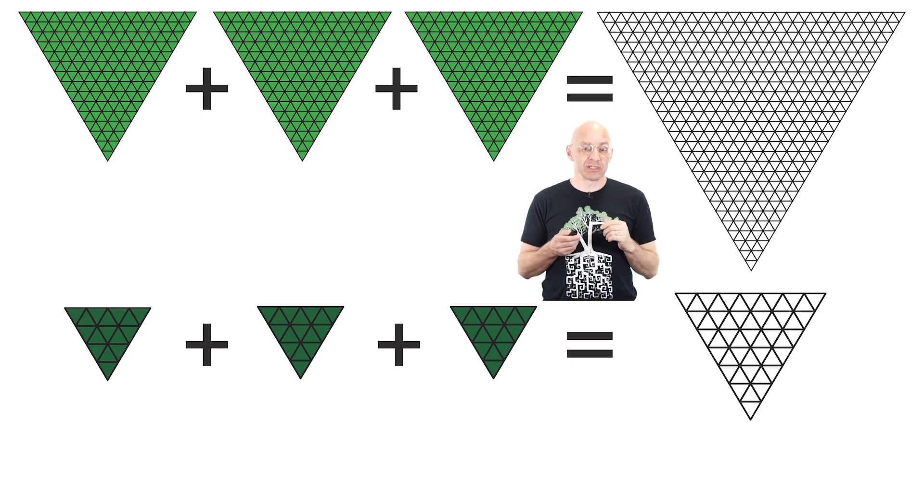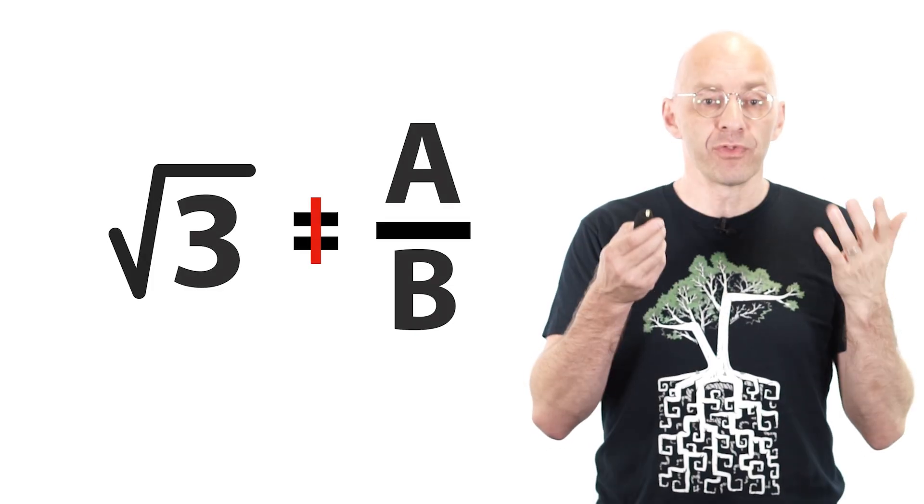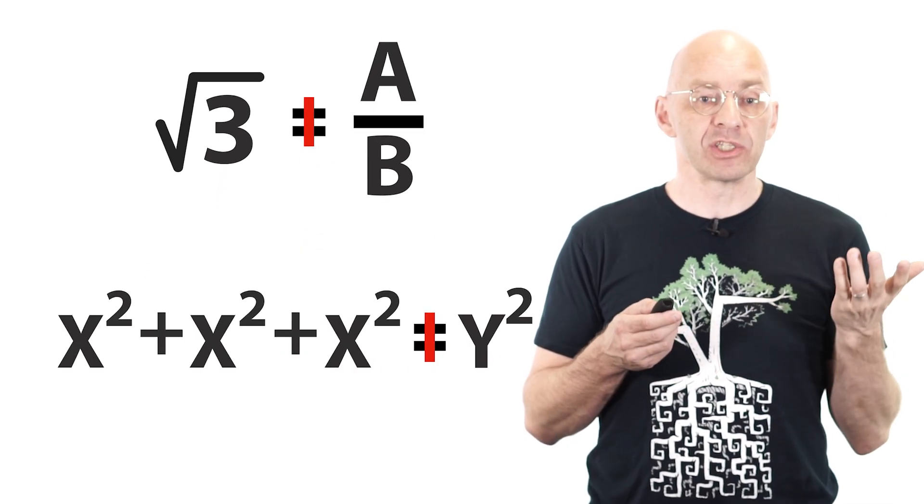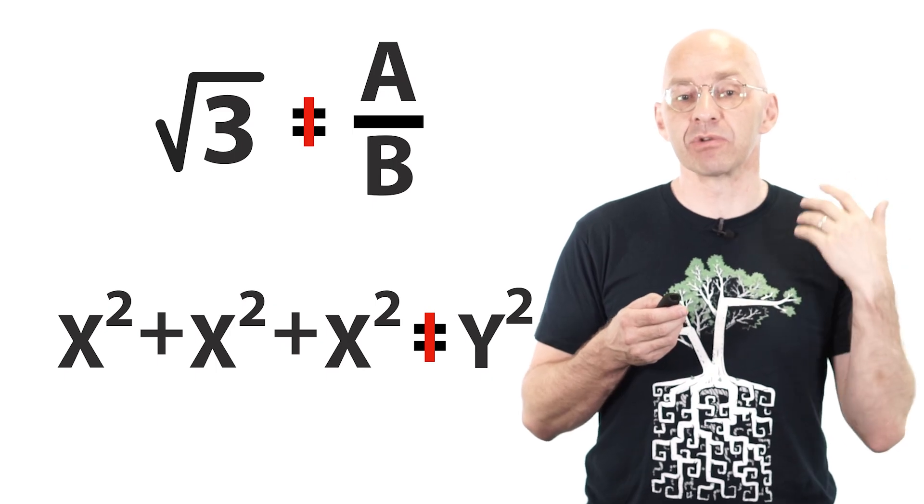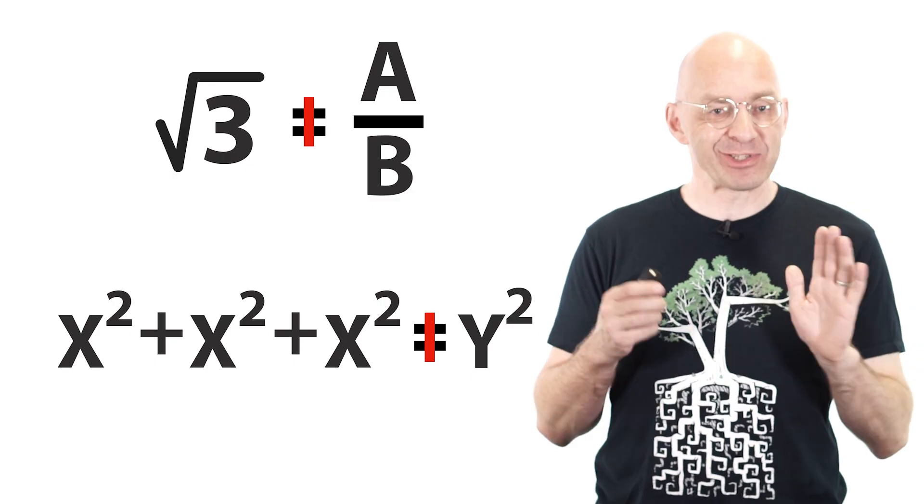Now the only way to resolve this contradiction is to conclude that the assumption we started with, namely that root 3 is a fraction, is false. In other words root 3 is irrational or equivalently, the equation x squared plus x squared plus x squared equals y squared has no solutions in positive integers. How slick is that?